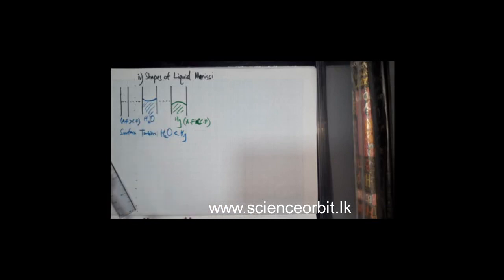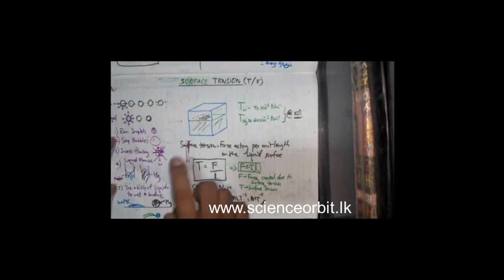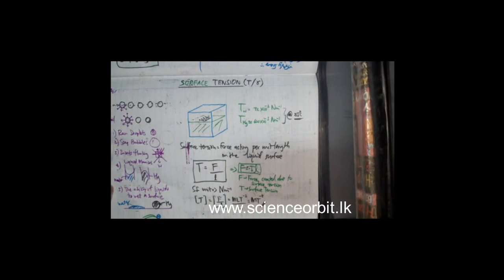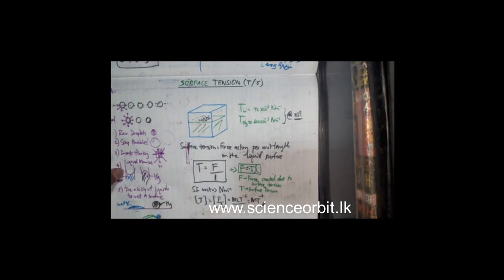That is how it looks like but this is the normal case for the upper menisci. Sometimes there are situations where we get a meniscus at the bottom, and we do not apply this to the top part. We have already discussed six aspects, including capillary rise, which we will discuss in upcoming lessons.